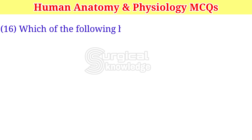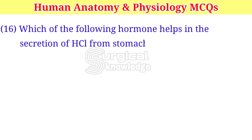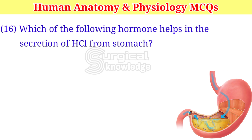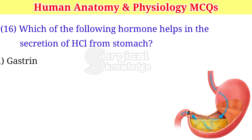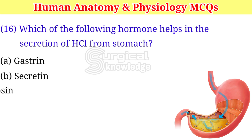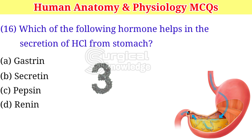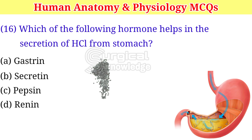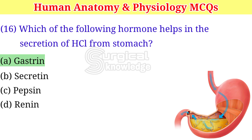Which of the following hormone helps in the secretion of HCl from the stomach? A. Gastrin. B. Secretin. C. Pepsin. D. Renin. Right answer is gastrin.